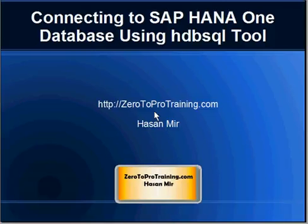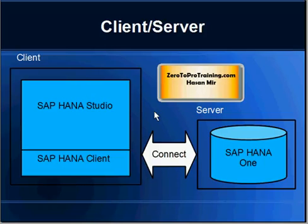In this session we will talk about connecting to SAP HANA One database using the HDBSQL tool. This is Hassan Mir from zerototoprotraining.com. In a typical environment, SAP HANA One database runs on a separate machine called a server, and we can make connections to the database from client machines. On client machines we have SAP HANA client running, which makes the connection to the database.